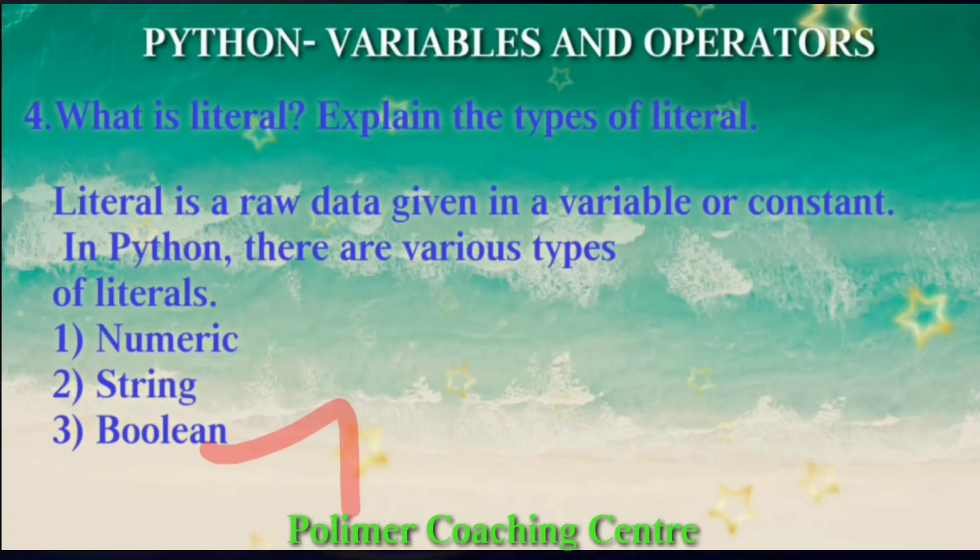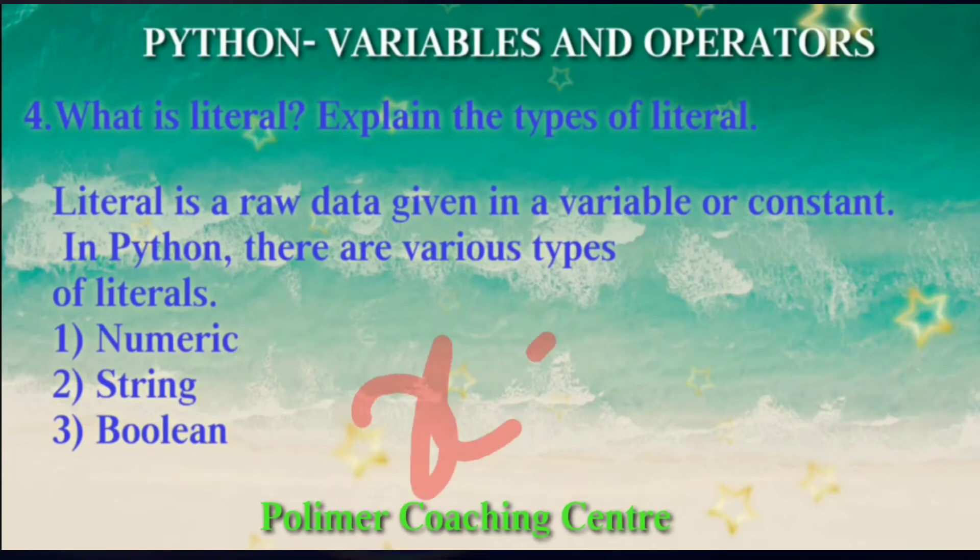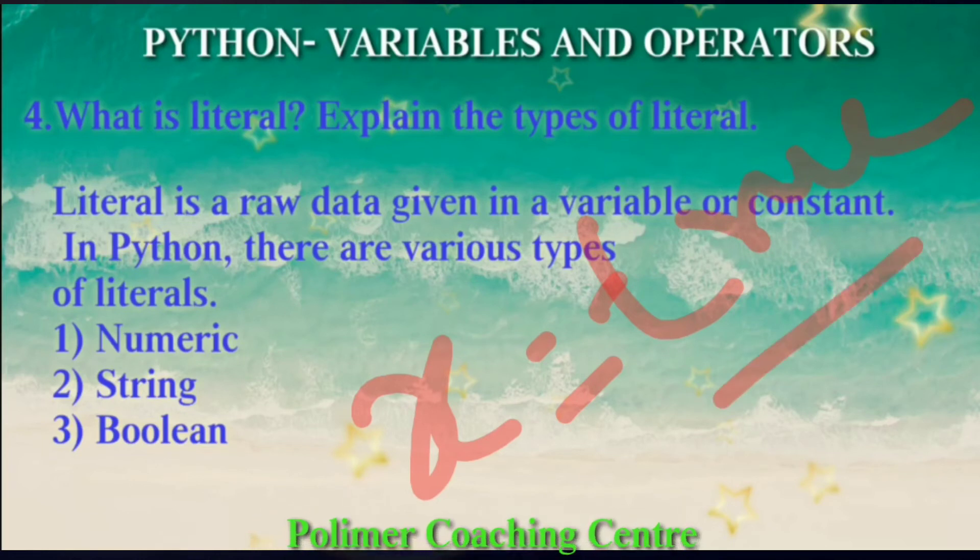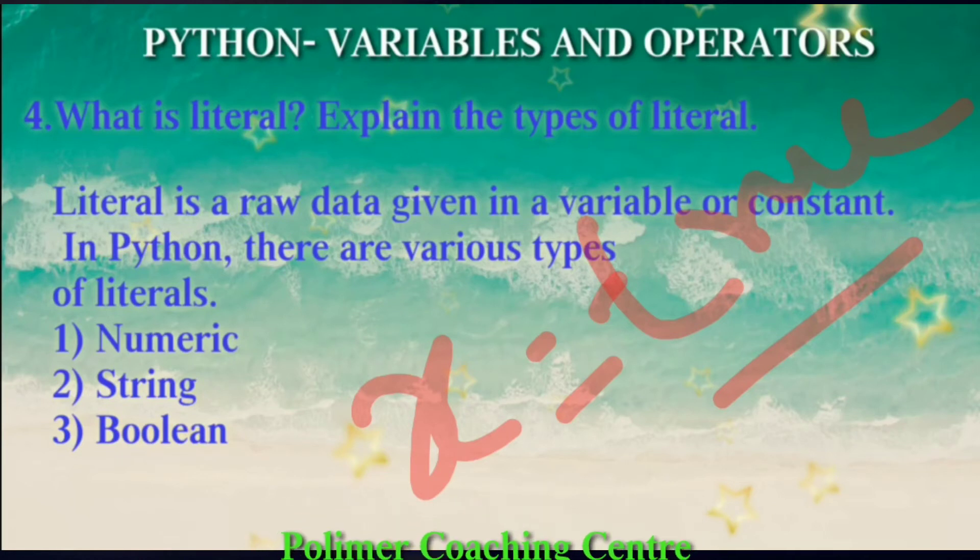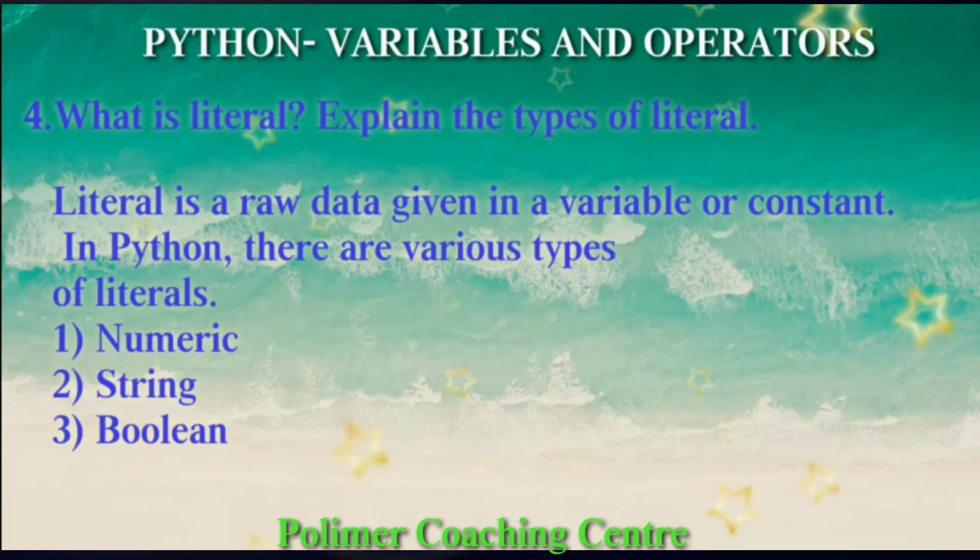The next is boolean. The boolean literal can have only two values: true or false. When it is true, it is a boolean data. It is false or true. So, this is boolean data. That's the two mark question. We will go to the next question.